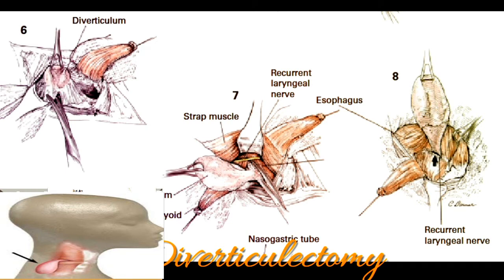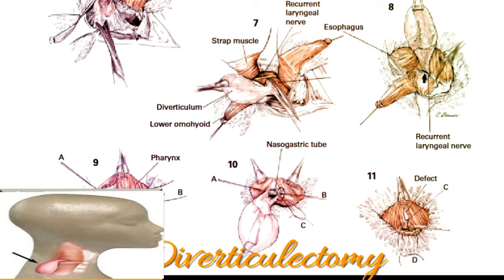If difficulty is encountered in outlining the diverticulum, the anesthesiologist can pass a rubber or plastic catheter down into it and inject air to distend the diverticulum. The lower end of the diverticulum is freed from its surrounding structures by blunt and sharp dissection; its neck is identified and its origin from the esophagus located. Special attention is given to removal of all connective tissue surrounding the diverticulum at its origin, until only the mucosal herniation through the defect in the muscular wall between the inferior constrictors of the pharynx and the cricopharyngeal muscle remains. Care must be taken not to divide the two recurrent laryngeal nerves, which may lie on either side of the neck of the diverticulum or in the tracheoesophageal groove more anteriorly.